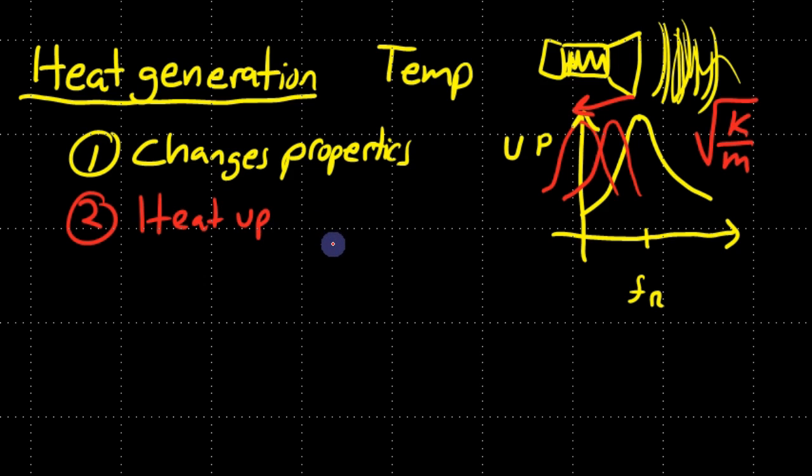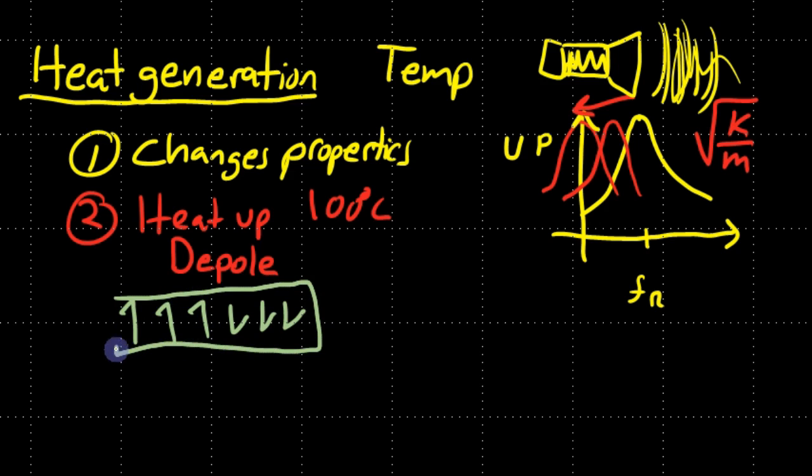If k decreases, then obviously the resonance frequency is going to decrease and your design will be off. The second point why we don't want heat generation, why it's sort of a bad thing, is because if the heating is significant enough - if it gets to 100 degrees Celsius - your ceramic or your transducer, it can depole the material.